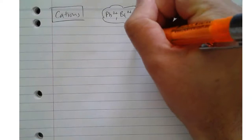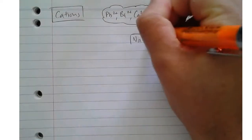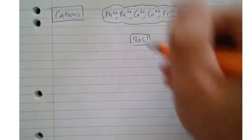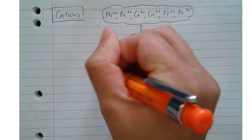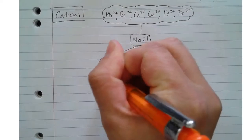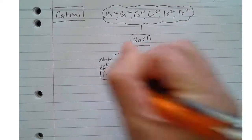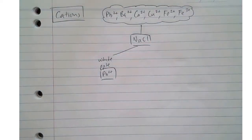So the first thing that we're going to start with is addition of sodium chloride. What that's going to do is we're going to get a white precipitate with one, which is going to be lead 2+. All of the other ions in this set won't precipitate.